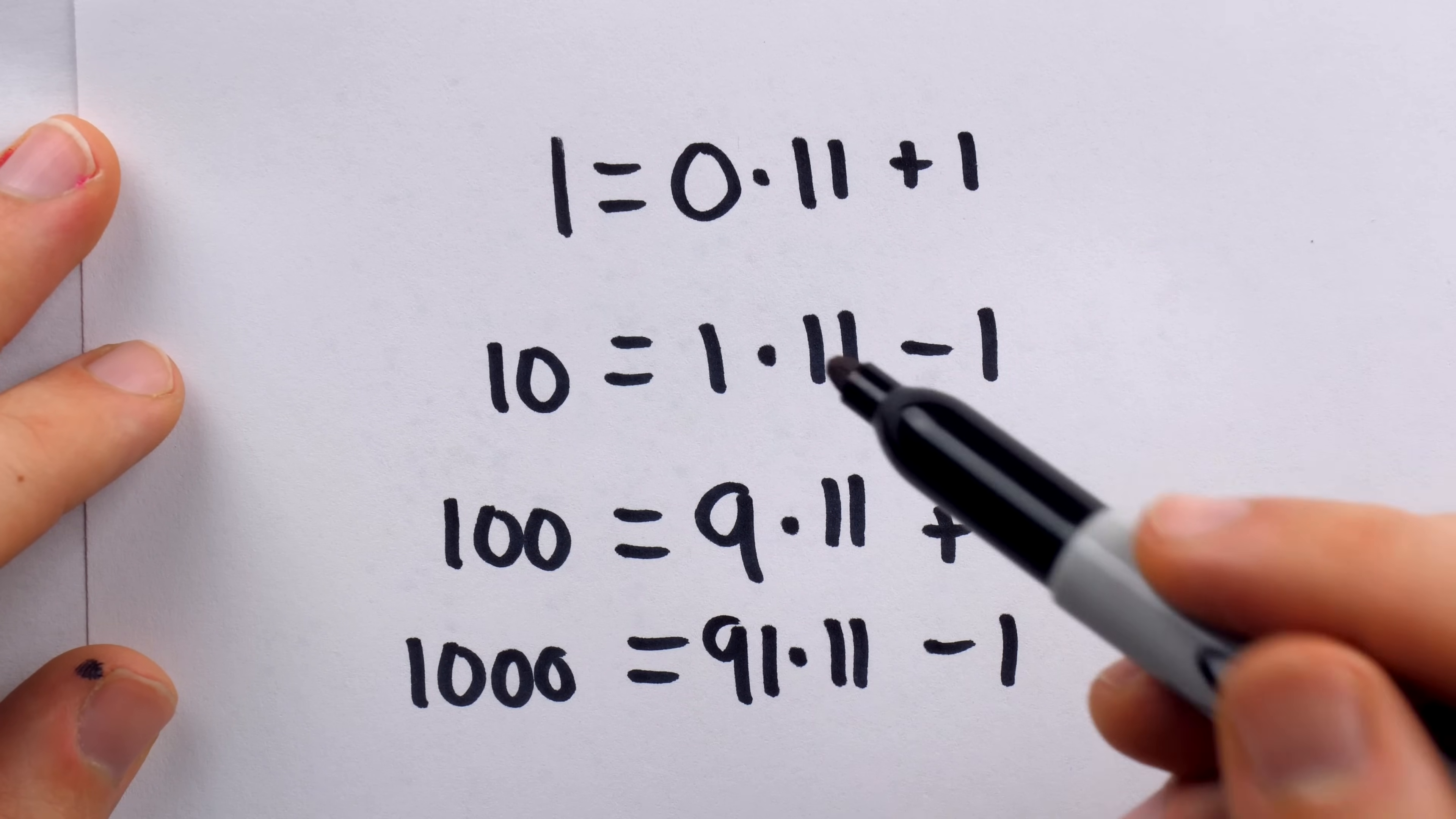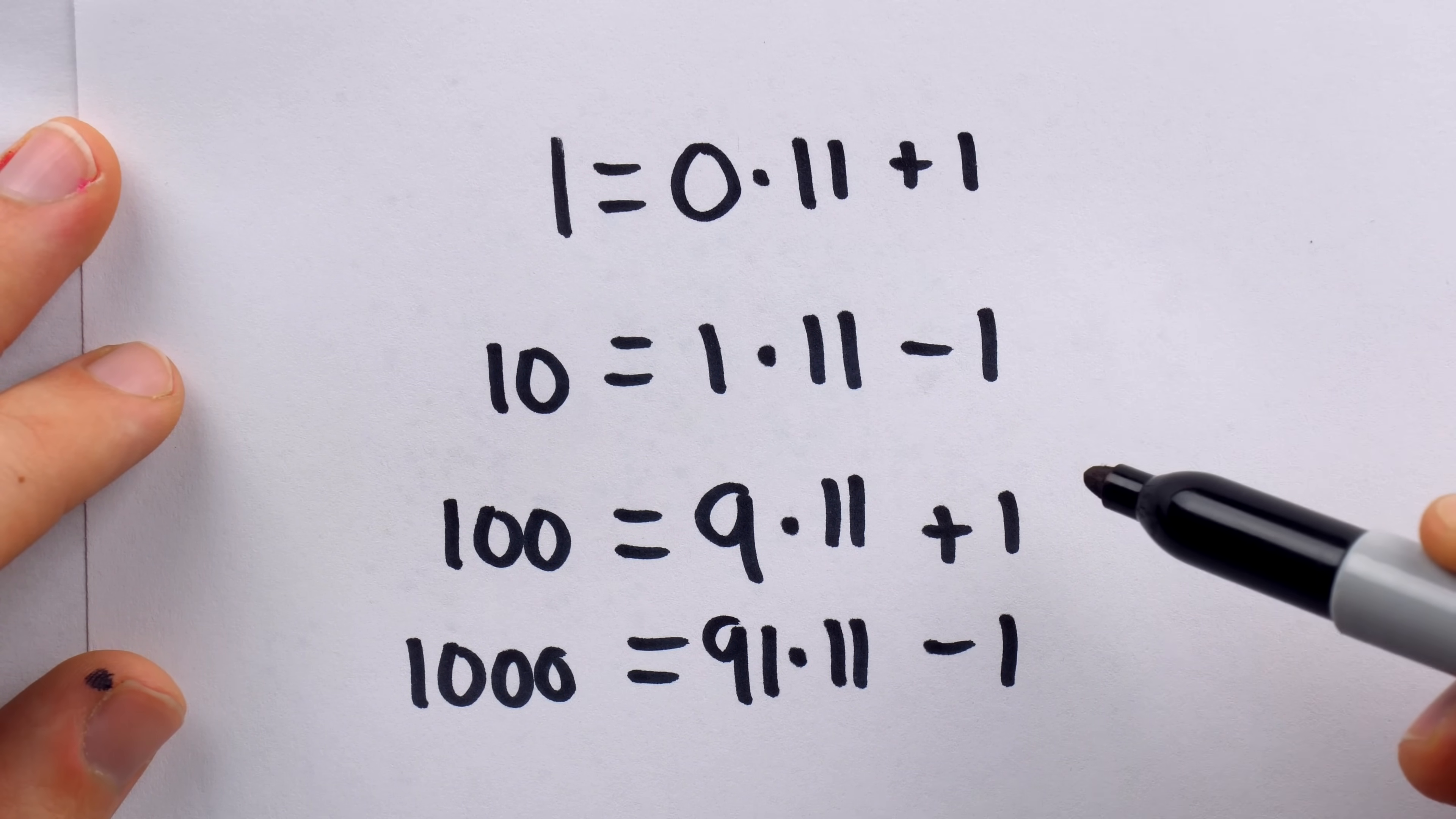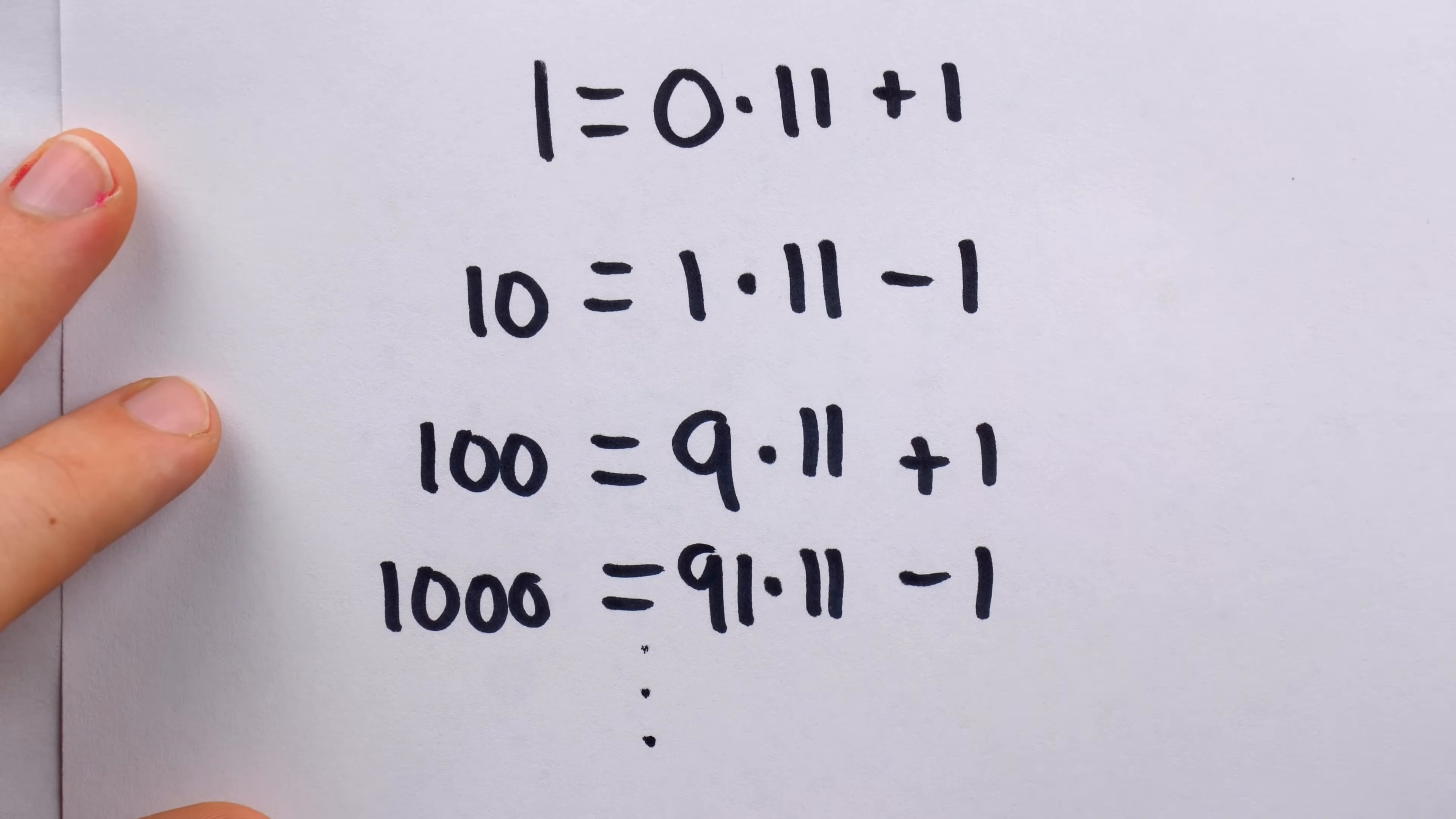The modular arithmetic argument comes down to the fact that the powers of 10 alternate between 1 and negative 1 mod 11. And that's, of course, why we can't just add the digits. We need to, in fact, use the alternating sum.